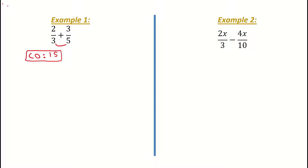It doesn't have to be the lowest common denominator. It could be 15, 30, or 45 — it's up to you. Just multiply the bottom numbers by each other and that'll get you your common denominator. Next, I write down my two fractions again: 2 over 3 plus 3 over 5. Now I think to myself, how do I make 15 from the 3? How many 3s are in 15? I divide 3 into 15 and get 5, so I put a little multiply by 5 on my first fraction.